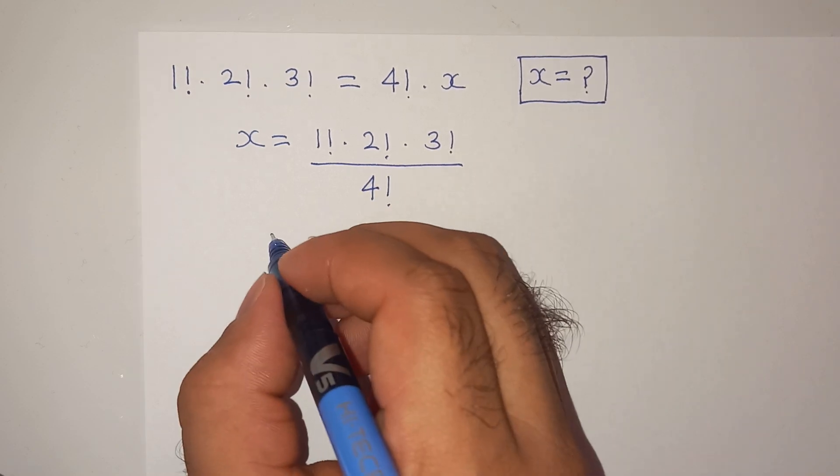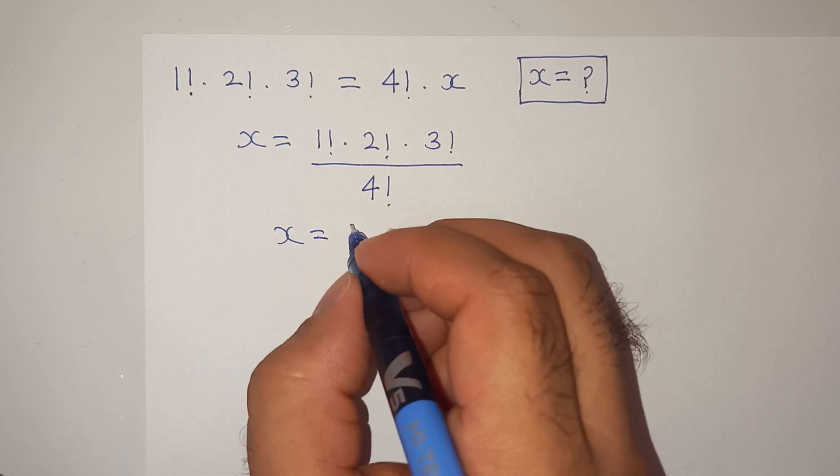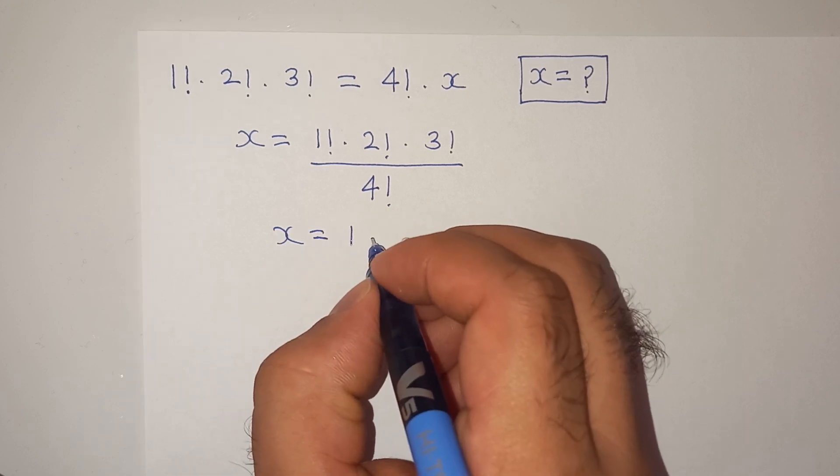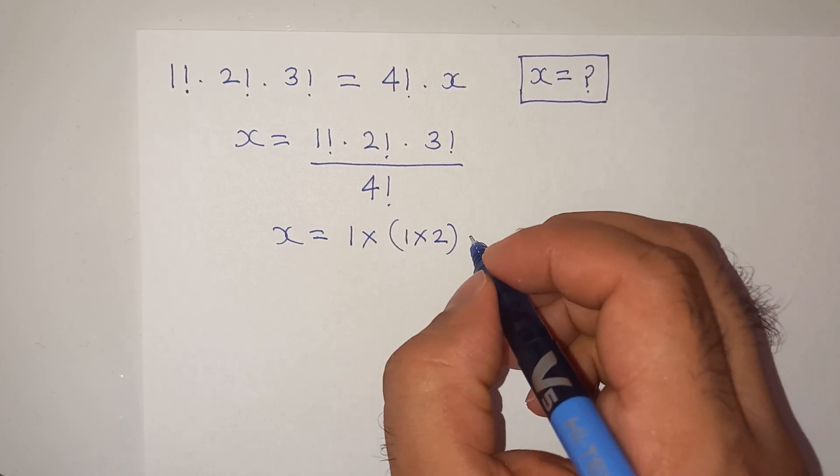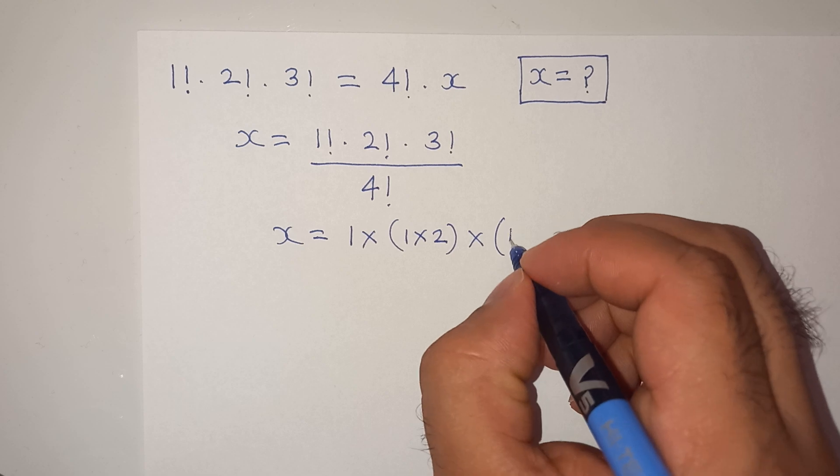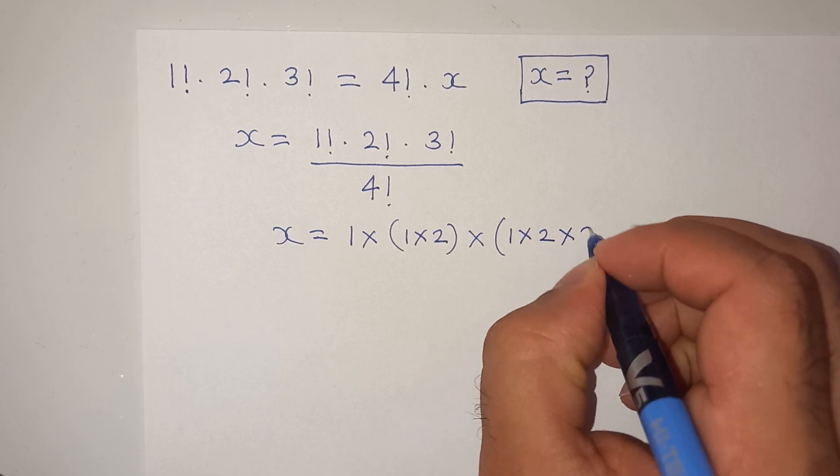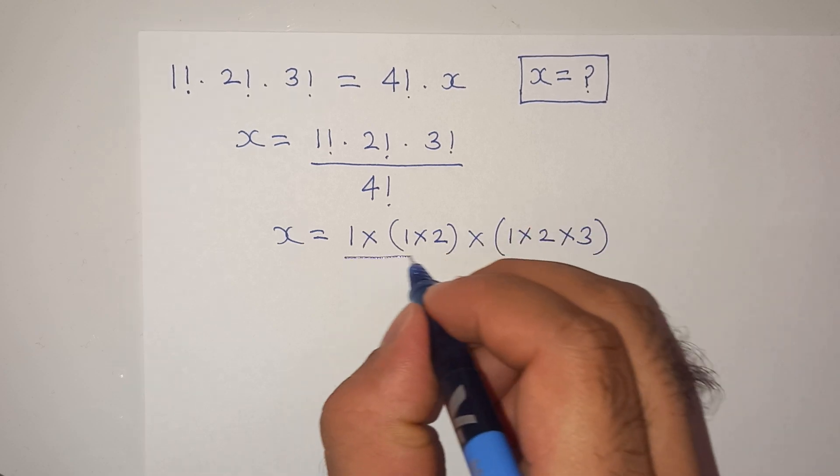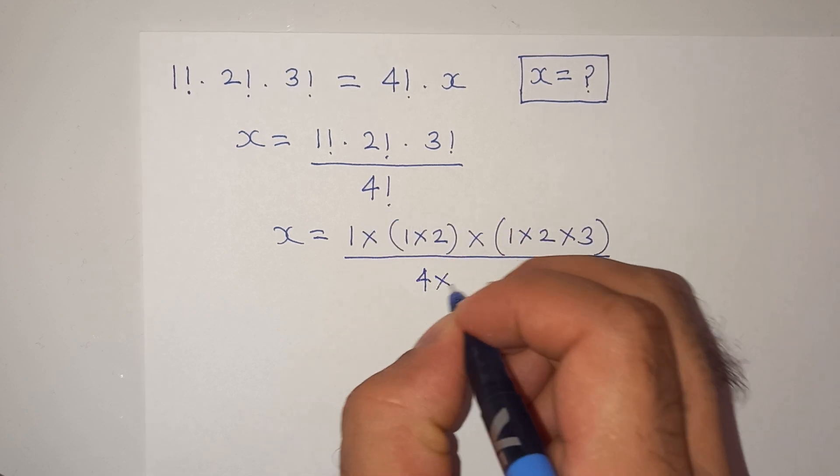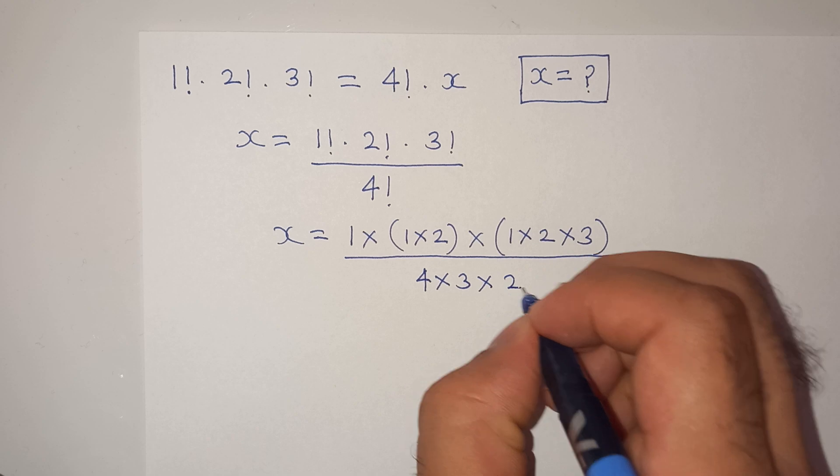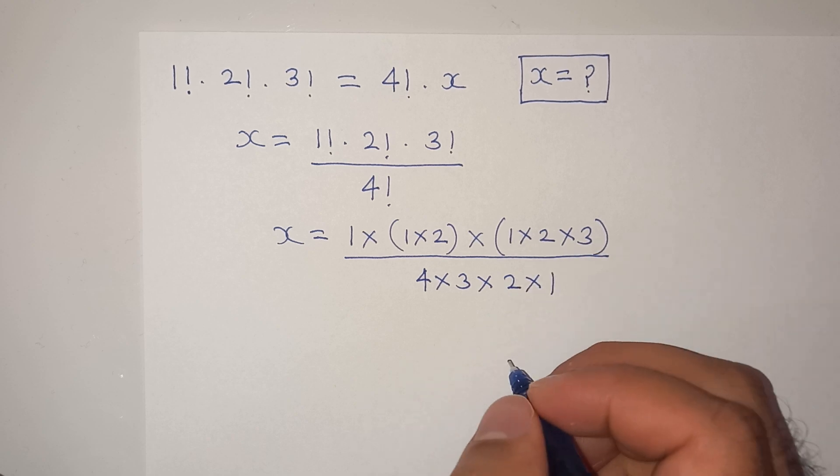So x equals to 1 factorial is 1 multiplied, this 2 factorial is 1 multiplied 2, 3 factorial is 1 multiplied 2 multiplied 3 divided by, and 4 factorial is 4 multiplied 3 multiplied 2 multiplied 1, right?